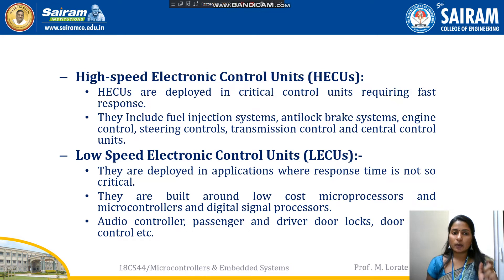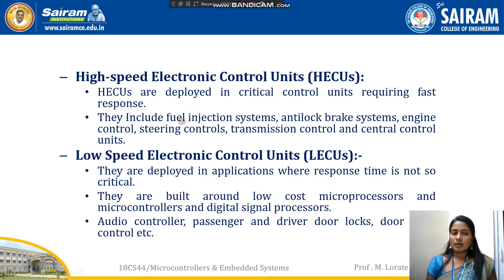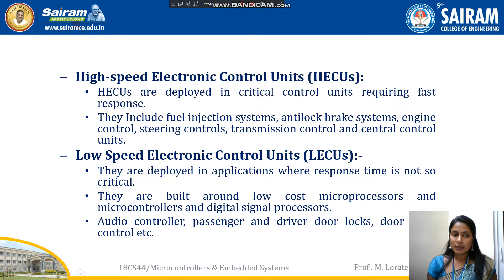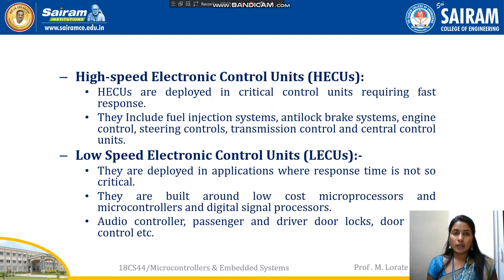Those kinds of applications only use high-speed electronic control units. Examples include: fuel injection system, anti-lock brake system, engine control system, steering control system, transmission control system, and central control system. All these applications need fast, critical time response, so they come under high-speed electronic control units. Next is the low-speed control unit, which is used in applications where response time is not so critical.